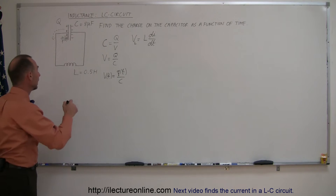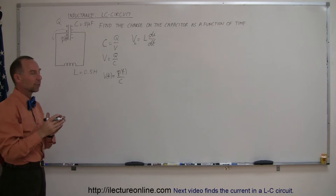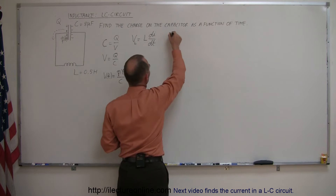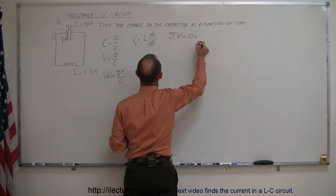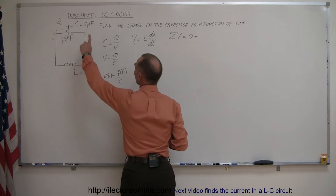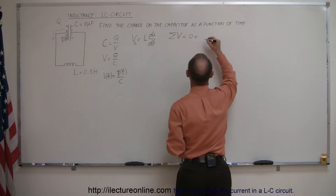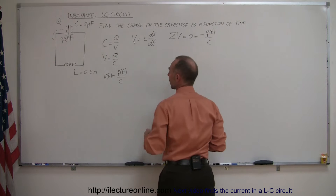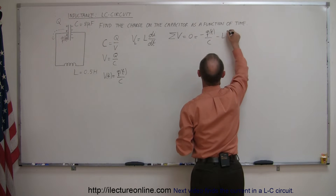So now if we use Kirchhoff's rule and go completely around the loop and figure out what the sum of the voltages are — and remember that the sum of the voltages across any loop is equal to zero — going across the capacitor the voltage is going to be Q over C, minus Q over C because it's a voltage drop, and across the inductor is going to be minus L dI/dt.